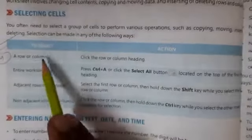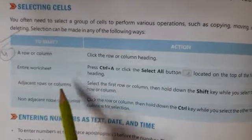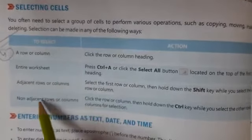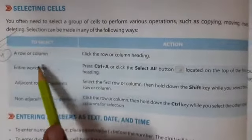For this, you have to make this chart. All the selections: how can we select a row, column, entire worksheet, adjacent row and column, and non-adjacent row and column. So all the actions you have to write at the end of answer number four. You have to make this full chart.